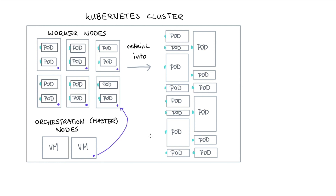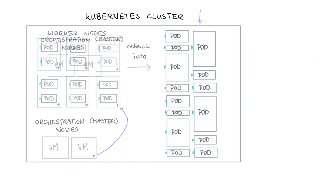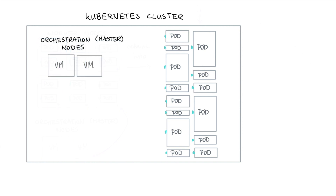It is good to know that in the background, every VM is running a process ensuring pods run correctly, and there's a process communicating with the worker nodes. But in terms of abstraction, it's much more useful to think about pods. A Kubernetes cluster has a couple of orchestration servers making sure pods are running, and it's those pods that we'll mainly focus on.